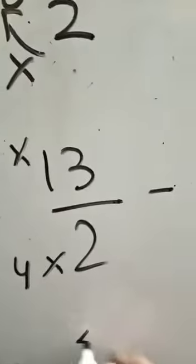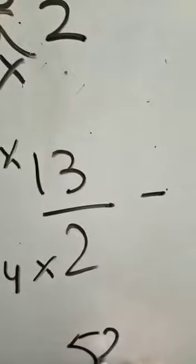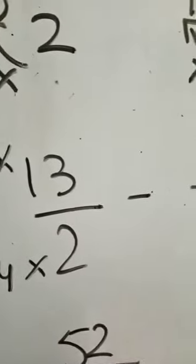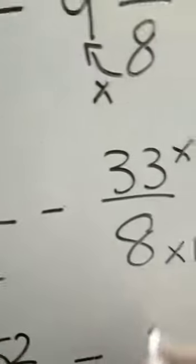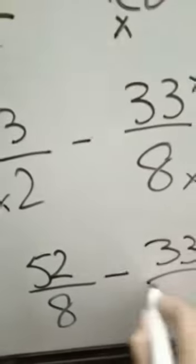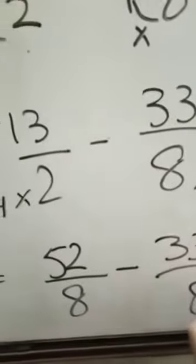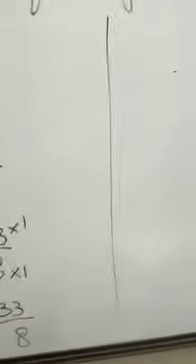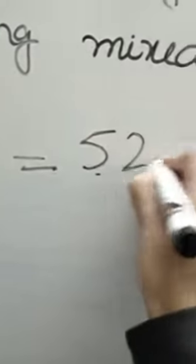We will write here. 2 by 4 is 8, minus 33. 33 divided by 8. The denominator is less than 8. We will write the numerator down to the top. 52 minus 33 divided by — the denominator is the same.